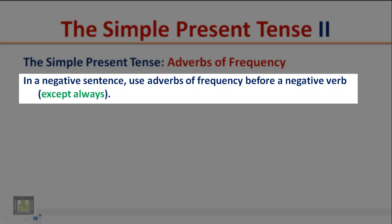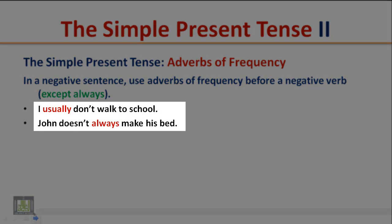In a negative sentence, use adverbs of frequency before a negative verb except always. Example: I usually don't walk to school. Notice here that the adverb of frequency comes before a negative verb.